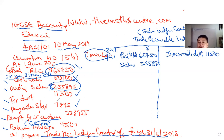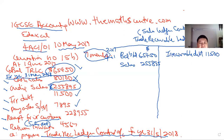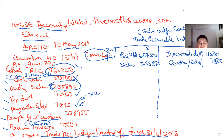Payables set-off means you have a customer who is also your supplier. For example, if I owe a customer 100 and they owe me 1,000, instead of exchanging separate payments we just set it off — they pay me 900. For a contra entry you always credit your TRLC and debit your TPLC (Purchases Ledger Control). So write 'contra' or 'set off' on the credit side: 7,895.